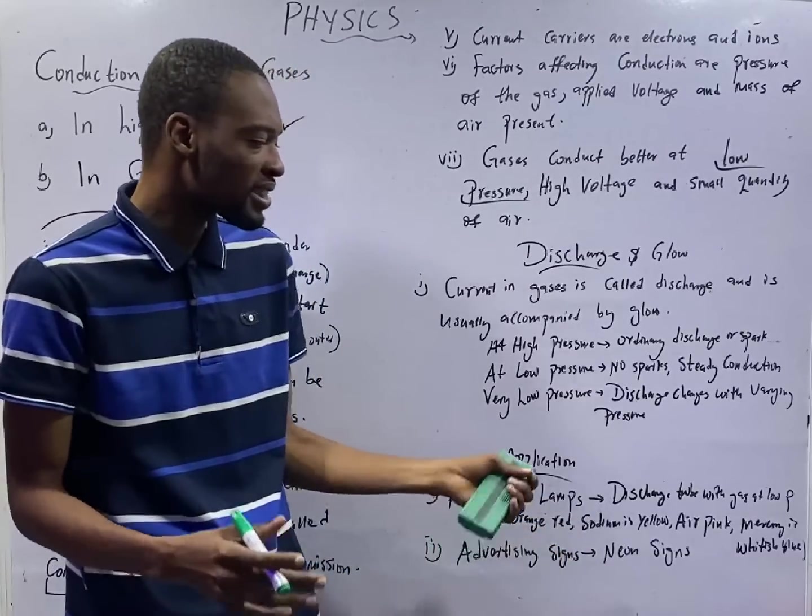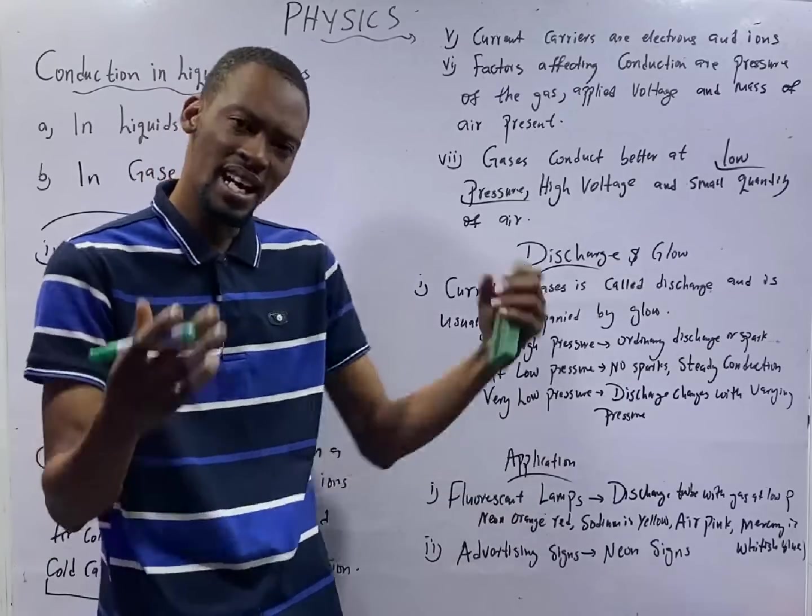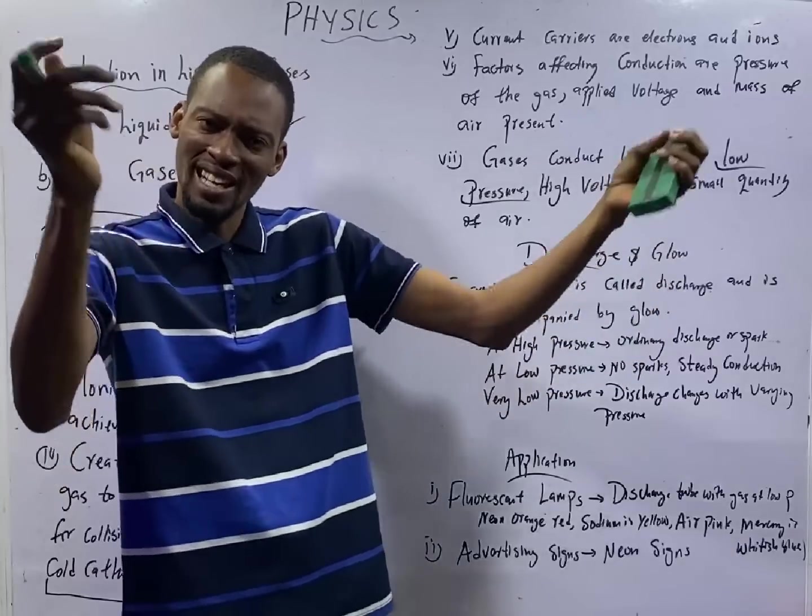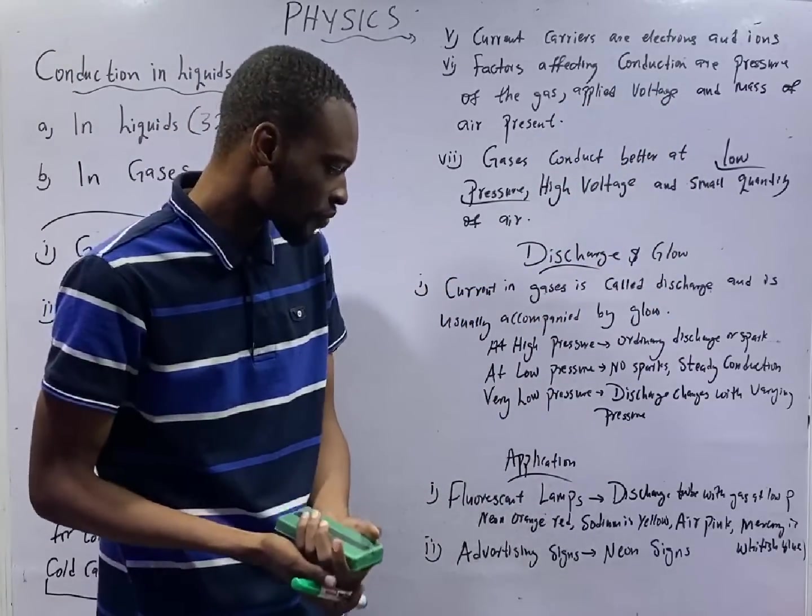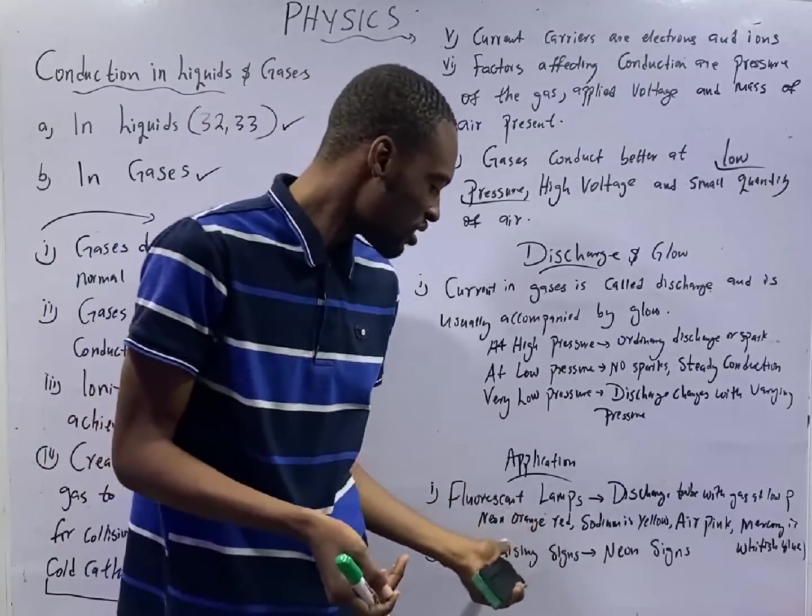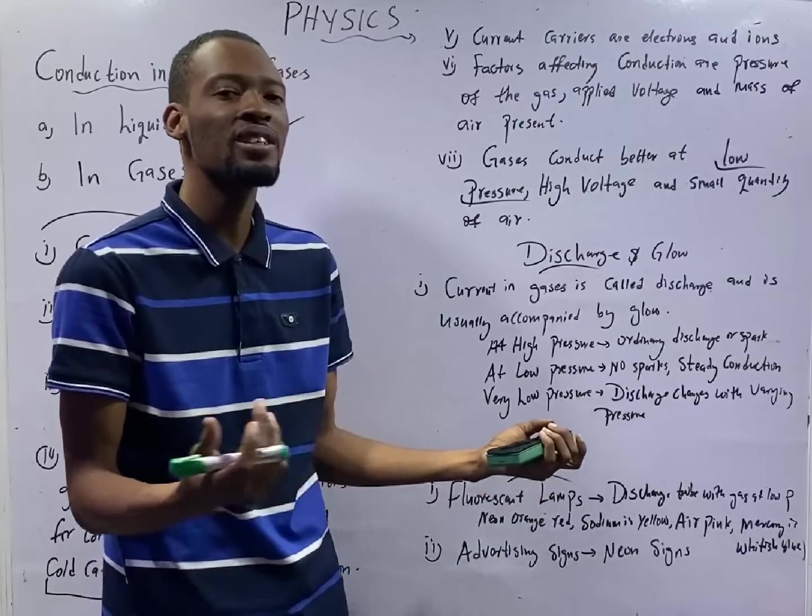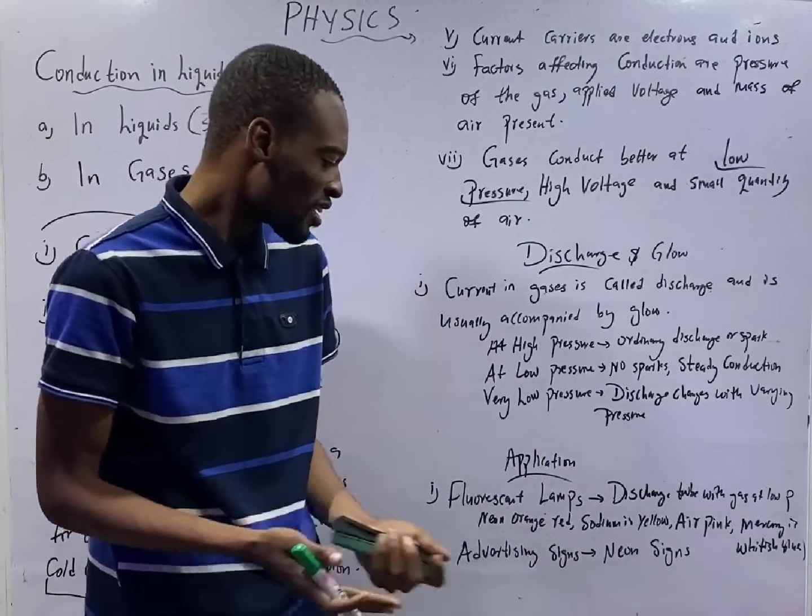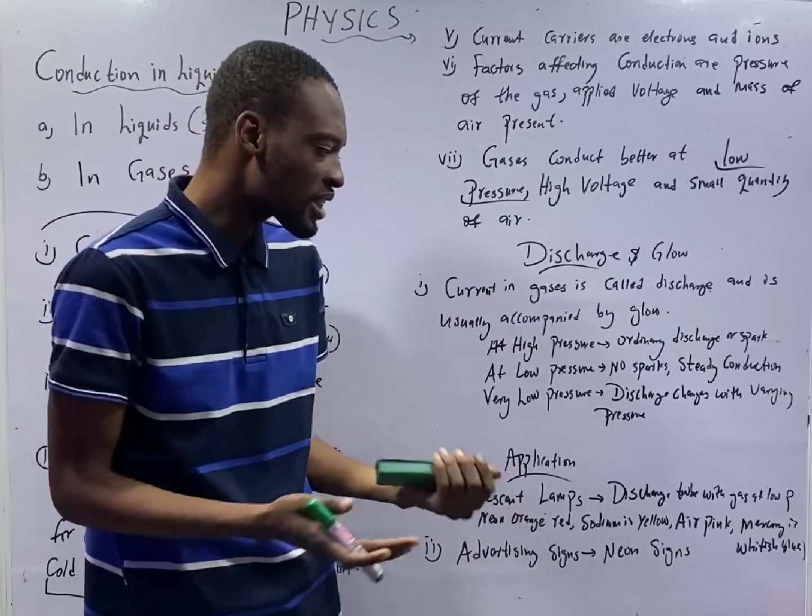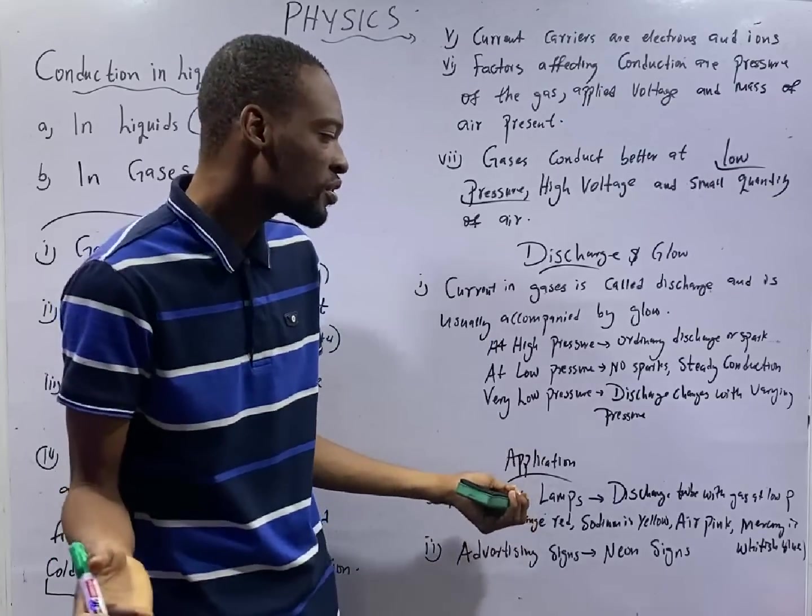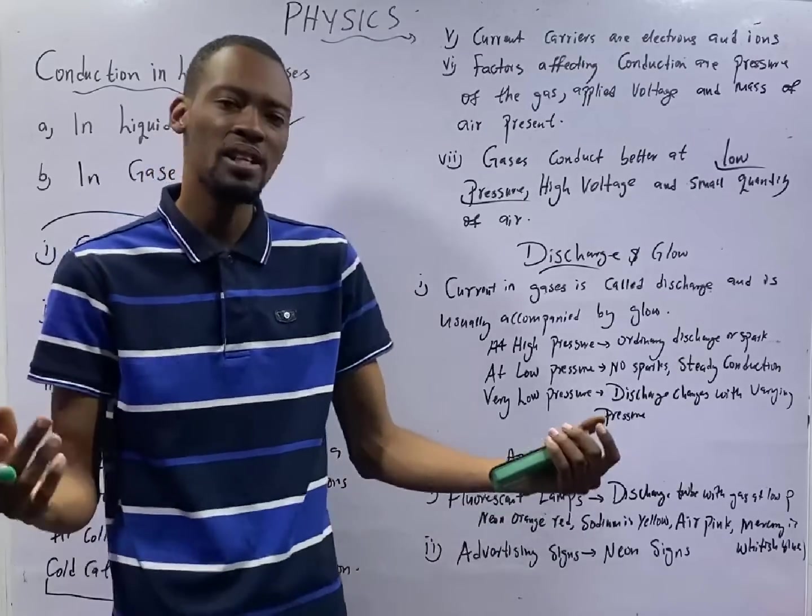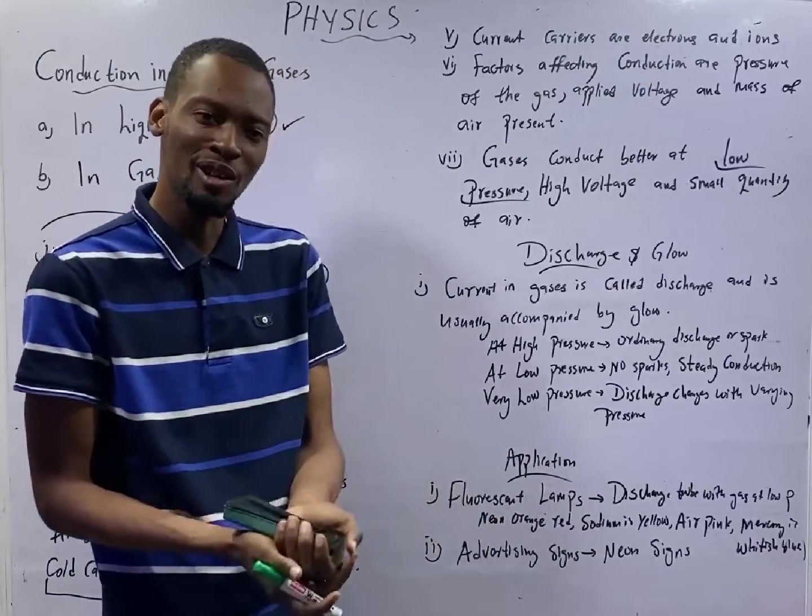For example, your fluorescent lamps, they are discharge tubes with gas at low pressure. They give us glow. All these lamps you are seeing, they are actually gases conducting electricity. And the difference, based on the gas you use, you have different color of glow. If you use neon, you will see orange-red glow. If you use sodium, you will have a yellow glow. If you use air, you will have a pink color. If you use mercury, you will have a whitish blue glow. So the color of gas is what determines the color of the glow.